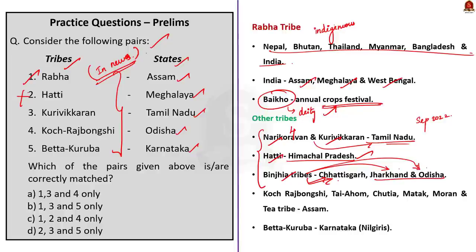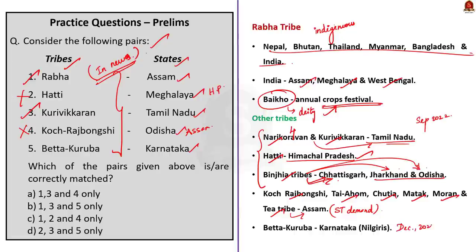Narikoravar and Kurivikaran tribes are found in Tamil Nadu, so the third pair is correct. Regarding Koch Rajbangshi — recently six tribal communities in Assam, namely Koch Rajbangshi, Tayahum, Chutia, Matak, Moran and T-Tribe, demanded inclusion in Assam's ST list. Koch Rajbangshi tribes are found in Assam, not Odisha, so the fourth pair is incorrect. Parliament passed a bill to include Betakuruba along with Kadakuruba in Karnataka's scheduled tribes list — Betakuruba tribes live in the hilly regions of Karnataka. The fifth pair is correct. The correct answer is option B — 1, 3 and 5 only.